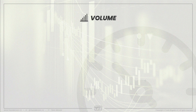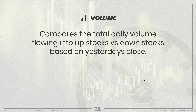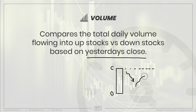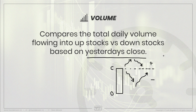The first internal is volume. It's going to compare the total daily volume flowing into up stocks versus down stocks, and this is based on yesterday's close — that's a key takeaway. For example, if this is yesterday's candle with an opening price down here and a closing price up here, if we're trading below yesterday's close today, that counts as down volume. Even if we had a gap down and are now trading up, if we're still below yesterday's close, it still counts as negative or down volume. The same is true but opposite above yesterday's close.